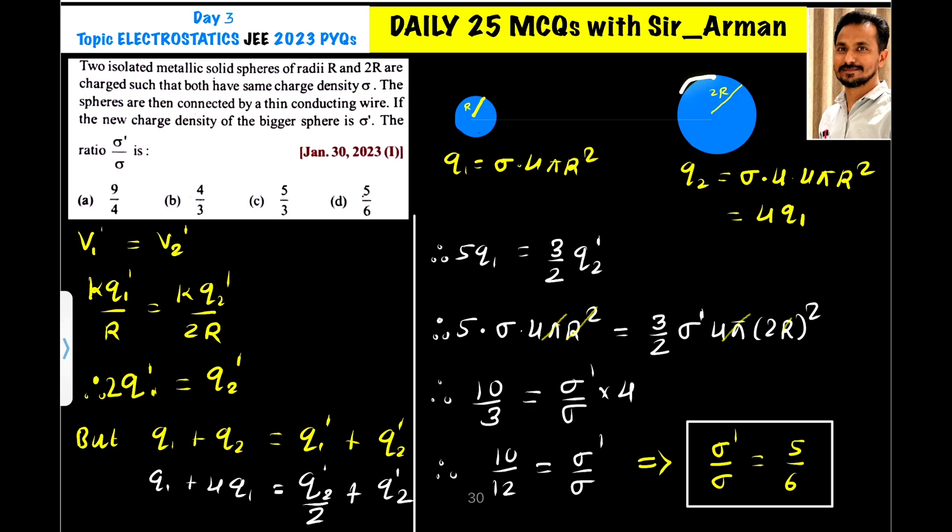Similarly, charge on the sphere of radius 2r is sigma into area. Here the area is 4π into (2r)², so it is 4 into 4πr².